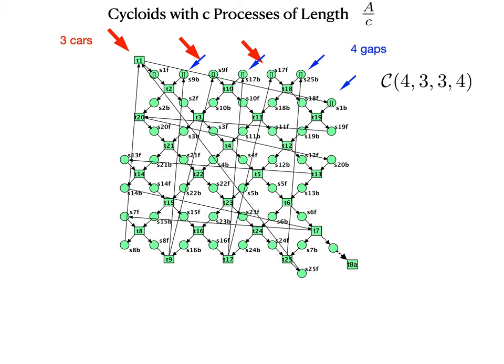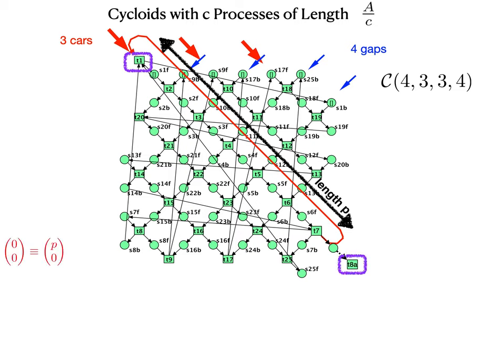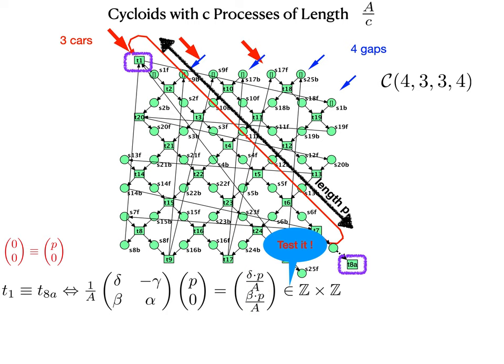A process has length P if we have such a cycle. This holds if and only if T1 is equivalent to T8A or in coordinates of the Petri space 0 0 is equivalent to P0. By the cycloid algebra, we obtain that the second component is an integer by the condition on P, but also the first component has to be an integer, hence beta has to be a divisor of delta.